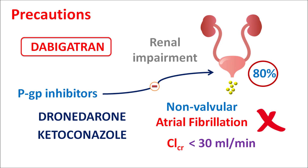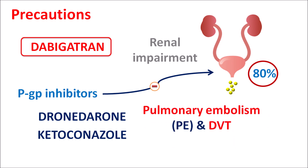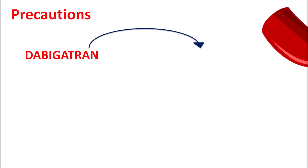Similarly, in the case of pulmonary embolism and deep vein thrombosis, still more stringent conditions are maintained. In those patients with creatinine clearance less than 50 mL/min, dabigatran should not be used. Even with mild renal impairment, patients should not use dabigatran along with P-glycoprotein inhibitors.